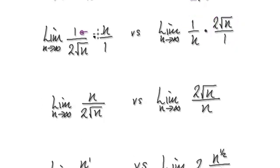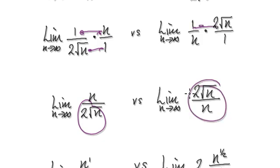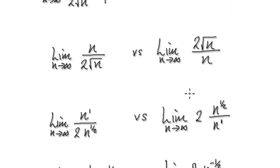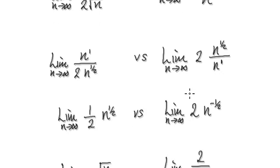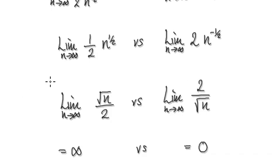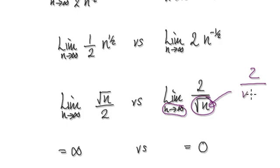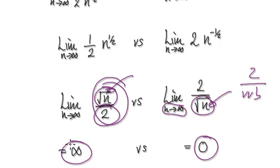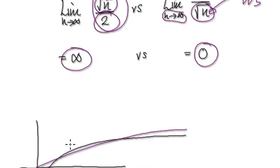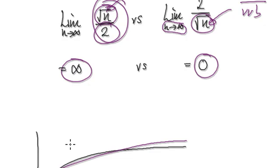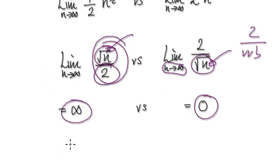Tidy up — top times top, bottom times bottom — that gives you this. Tidy up further, and that takes you to the simplified result. Now, as n gets bigger and bigger, 2 divided by something very, very big is going to head towards 0. On the other side, you've got something that keeps getting bigger and bigger divided by 2, so the whole thing just keeps getting bigger and bigger.